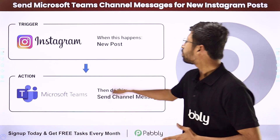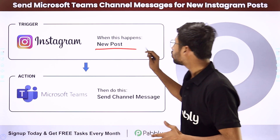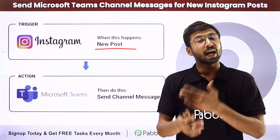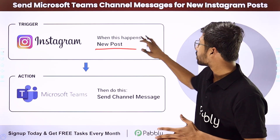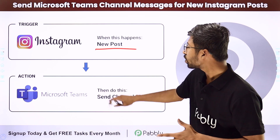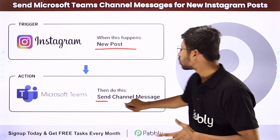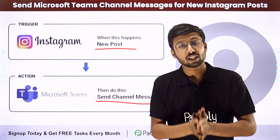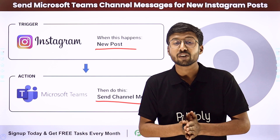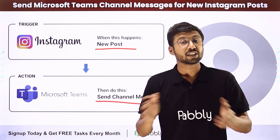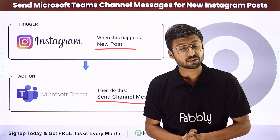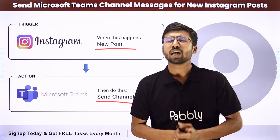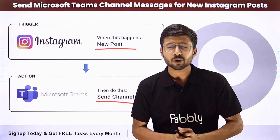In this automation, the trigger will be sharing a new post on our Instagram account. Then the action will be: as we share this new post, automatically a channel message will be sent on our Microsoft Teams channel, updating our team members regarding the new post which we have shared, with its link also. So how can you set up this automation?